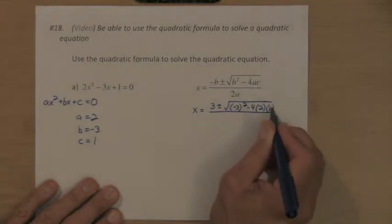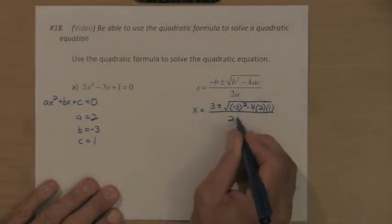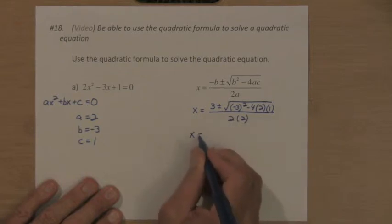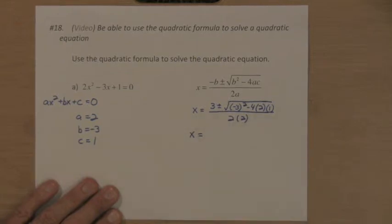And then the denominator, the bottom, is two times a, a is a 2, so it's two times 2. And the rest of this work is simply simplify that fraction.